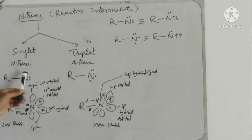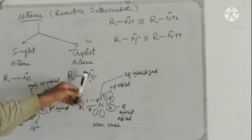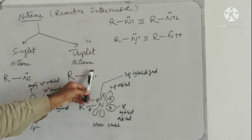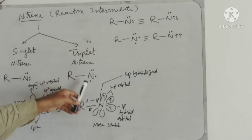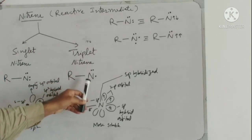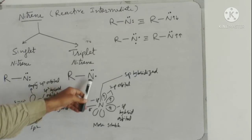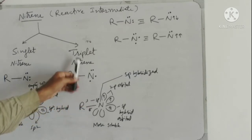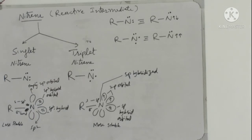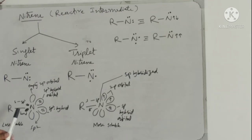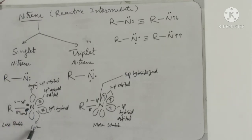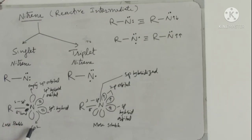If these four electrons have two electrons present as a lone pair and two electrons as unpaired, they form triplet nitrenes. This is the electronic structure of the singlet nitrene. In the case of the singlet nitrene, nitrogen is sp2 hybridized.